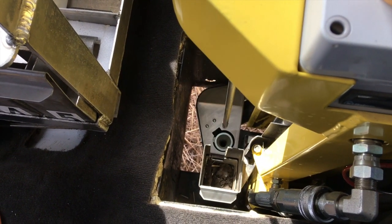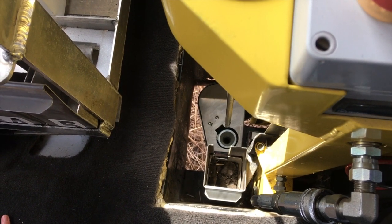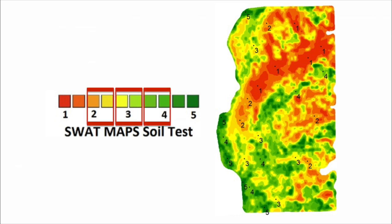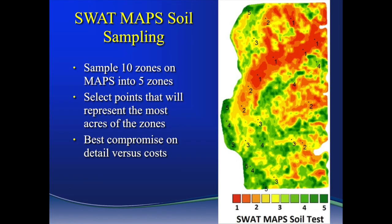Once the final SWAT map is collected, the agronomists will go back to the field and soil sample. Five separate sets of samples are taken: one on the extreme high and dry end of the soils, one at the extreme water collecting areas or saline spots, and three sets of samples in between. Of these five sets of samples, up to 20 samples can be taken in each zone. The overall result is very in-depth soil sampling based on the soil, water, and topography.